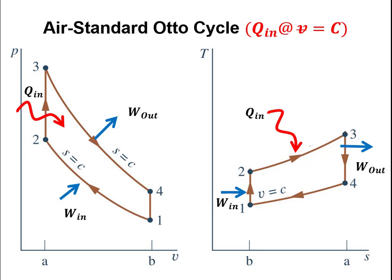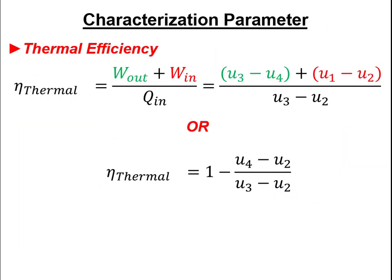Then we get the power stroke, where the piston moves downward so volume increases and pressure drops, generating work in the system. Finally, heat is exhausted to the surroundings. This is still a heat engine, so we characterize it by thermal efficiency, which is net work divided by heat in.